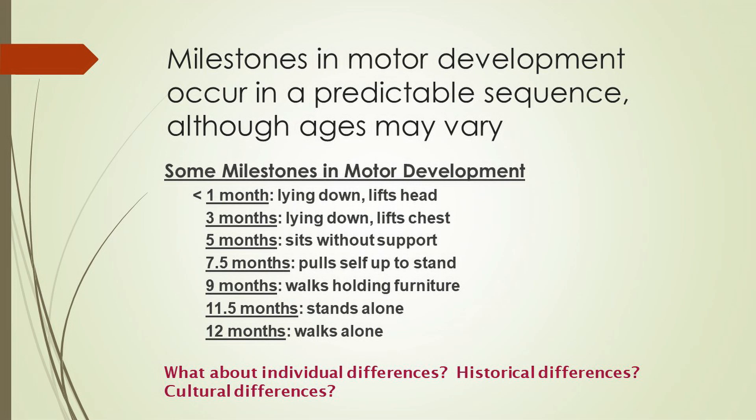Interestingly, there are also historical differences in the age at which children learn to walk in the United States. Sixty to seventy years ago, children tended to walk on average at about 15 months — later than they do today. Most scientists attribute this change to improvements in diet, improvements in socioeconomic status, or possibly genetic inheritance, though we can't really know the answer for certain.